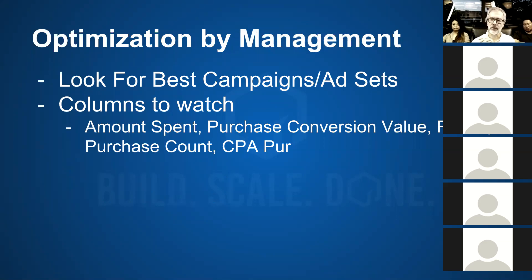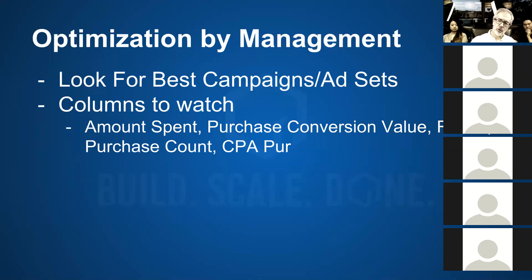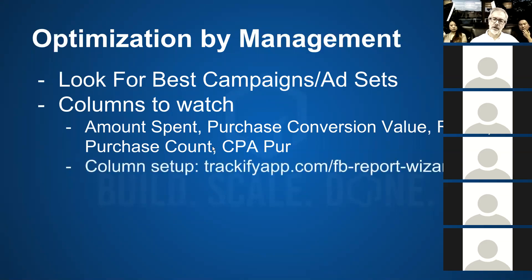The next column I set up is ROAS — Return on Ad Spend. Since they've launched it, ROAS has become a really important metric for me to watch. I really like it because it captures not only what each conversion costs, but how the cost is relative to the revenue. If a transaction brings in a lot of revenue, it's a higher ROAS than if a conversion brings in less revenue. So ROAS is a better metric than just looking at the cost per purchase. I also still look at the count — how many transactions you have — and the CPA, the cost per purchase.